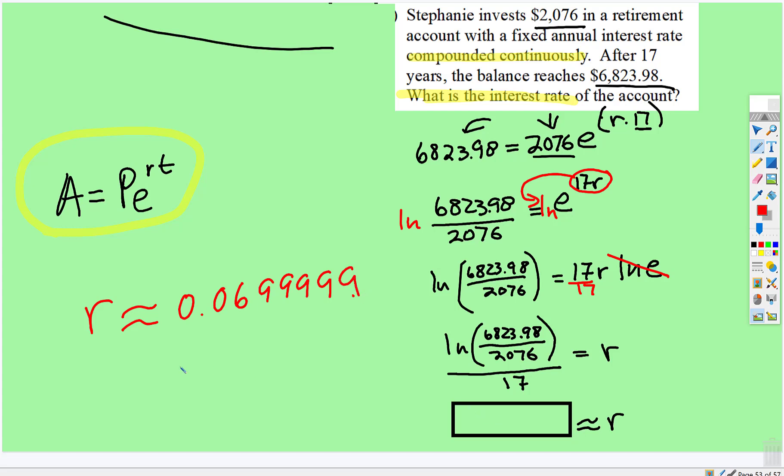Let's see, so that rounds to that. Well, we want an interest rate, so we convert the decimal to a percentage, so about 7%. Okay, that's it for this one.